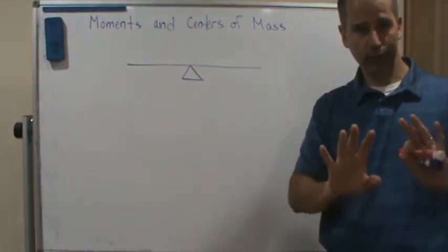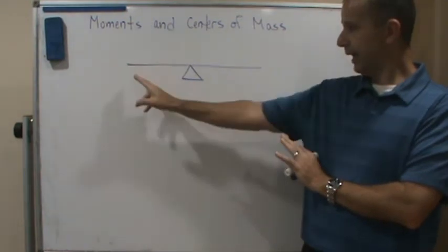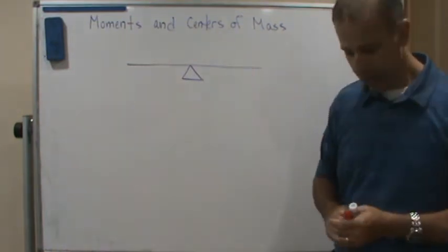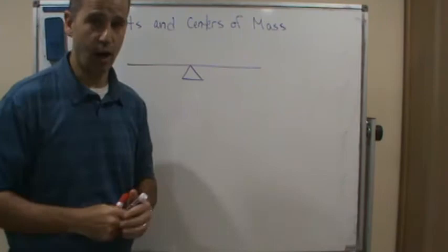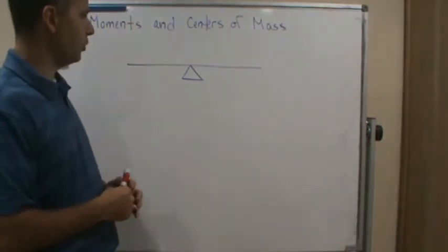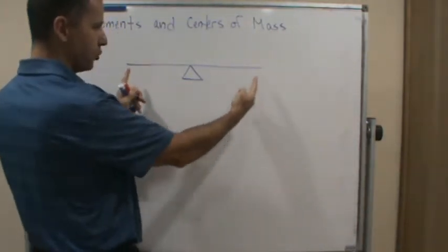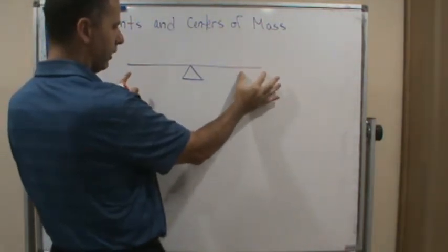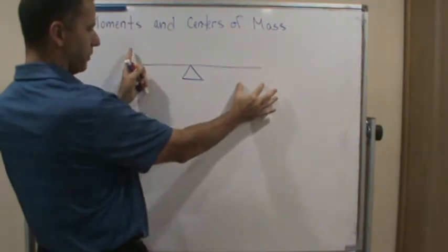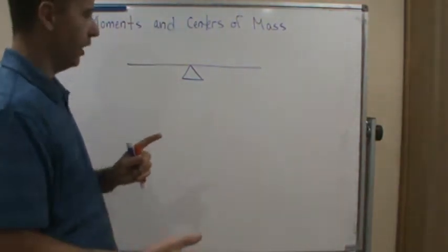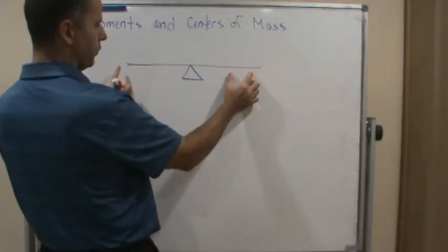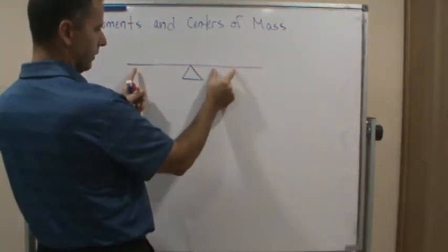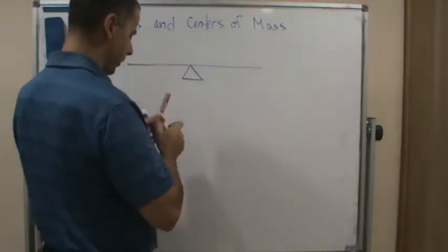How do we find the balancing point? Let's use a simple example with a fulcrum and a thin bar — like a seesaw. You have kids of different weights trying to find the point where they balance. A heavier kid on one side, a lighter kid on the other — it tilts toward the heavier kid. So the heavier kid moves in until it balances.